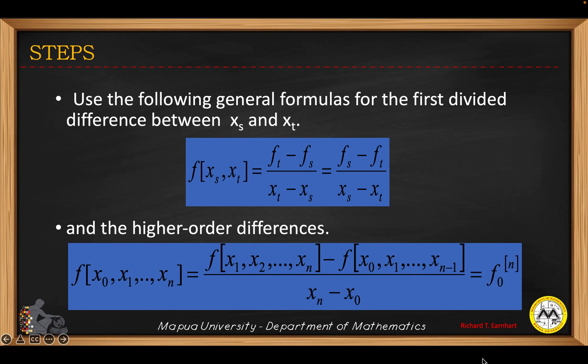As you can see, we have the difference between x sub s and x sub t. The first divided difference is the difference between the y values over the difference between the x values, where f sub t and f sub s are the corresponding values for x sub s and x sub t. For a higher order difference, you have x sub 0 up to x sub n, giving you the nth order difference divided by x sub n minus x sub 0.